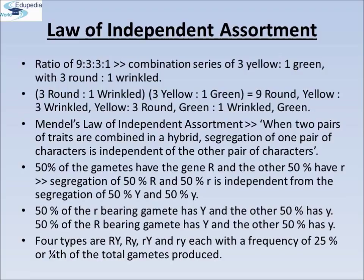Based on such observations on dihybrid crosses — crosses between plants differing in two traits — Mendel proposed a second set of generalizations that we call Mendel's law of independent assortment. In this law, when two pairs of traits are combined in a hybrid, segregation of one pair of characters is totally independent of the other pair of characters.